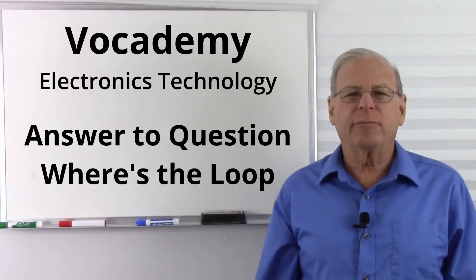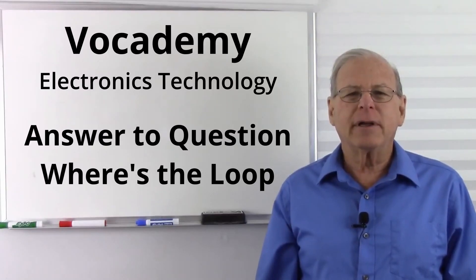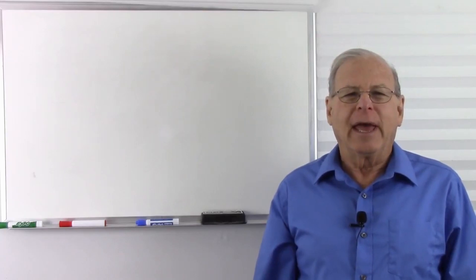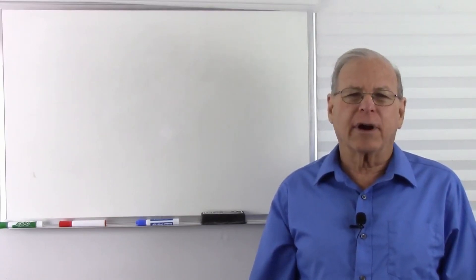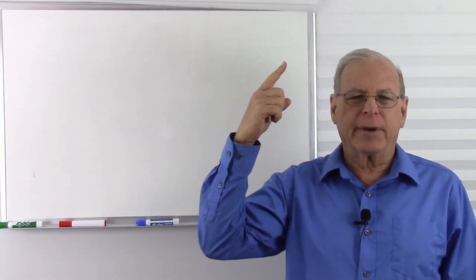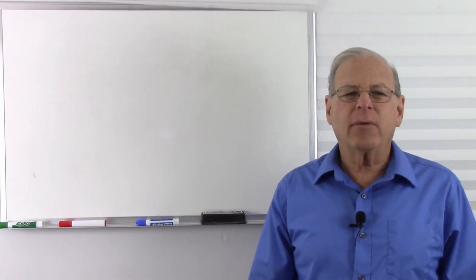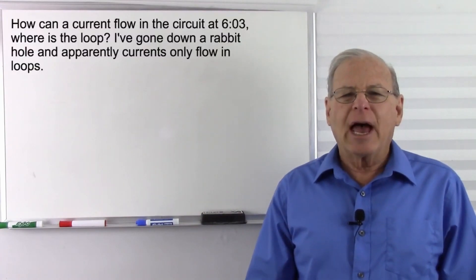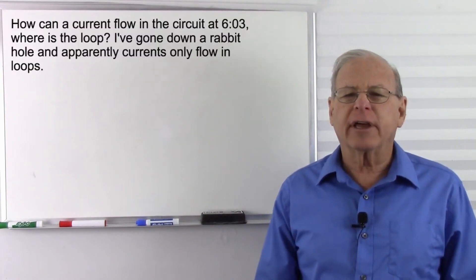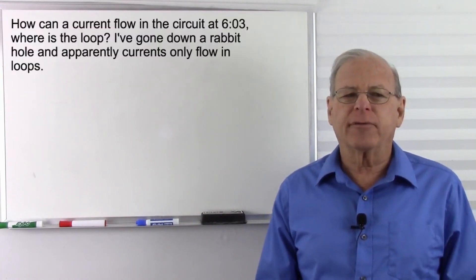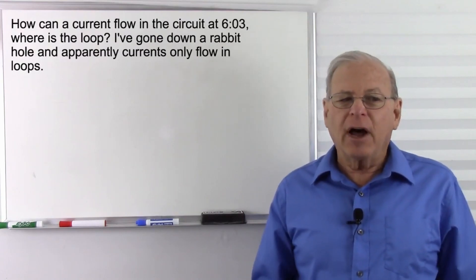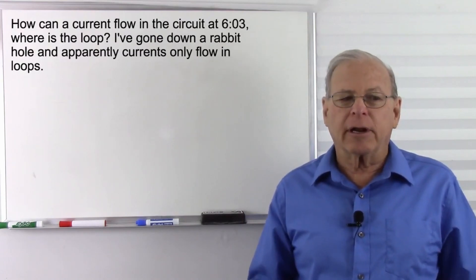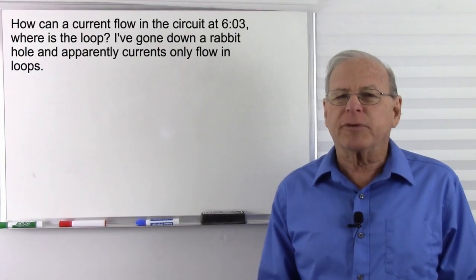Today, I'm going to answer a question by a viewer who goes by the name of NoName. His question pertains to the video titled 'What is Ground,' which I have linked up here and down in the description. The question is: how can current flow in the circuit at 6 minutes and 3 seconds? Where is the loop? I've gone down a rabbit hole, and apparently currents only flow in loops.